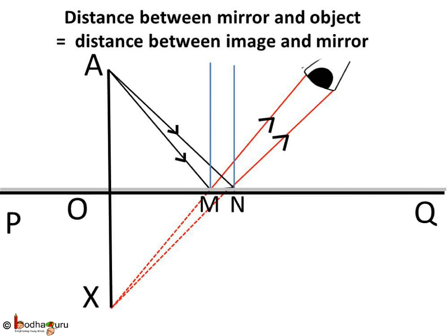If we measure the distance between A and the mirror and also the distance between X and the mirror, what do you see? We would find that both the distances are actually the same. So from this we can conclude that the distance between the object and the mirror is equal to the distance between the mirror and the image.